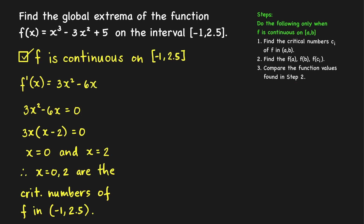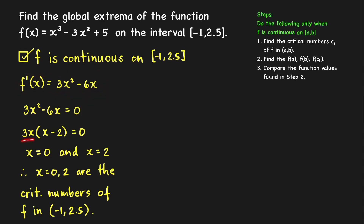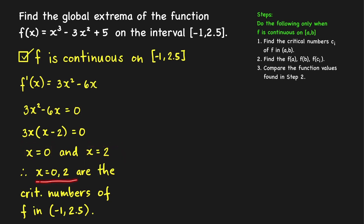Step 1: we compute the derivative of our function. f′(x) = 3x² − 6x. Since the derivative always exists, we equate it to 0 to find the critical numbers and solve by factoring: 3x(x − 2) = 0. The derivative equals 0 when x = 0 and when x = 2. Both of these are critical numbers of f in the open interval (−1, 2.5).